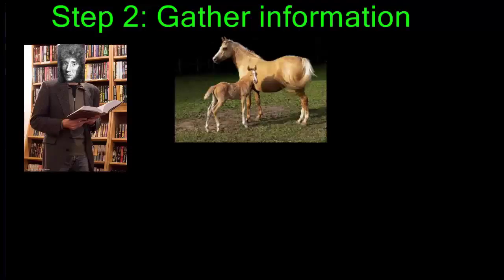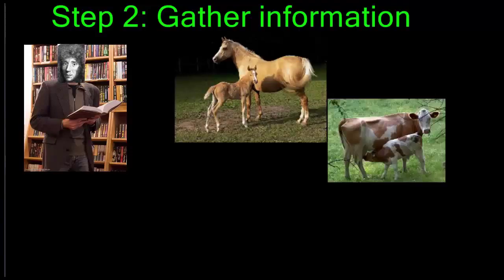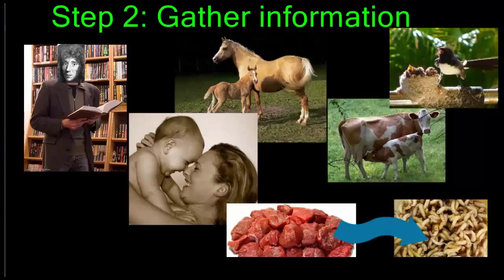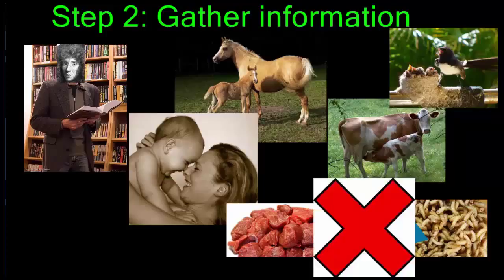He doubted that something alive could come from something dead. He looked around in his environment and noticed: horses come from other horses, cows from other cows, birds from other birds, and people from other people. So how could maggots possibly come from something dead like decaying meat? Based on this direct observation, he decided that spontaneous generation could not be the answer, so he was going to design an experiment to answer: where do they come from?